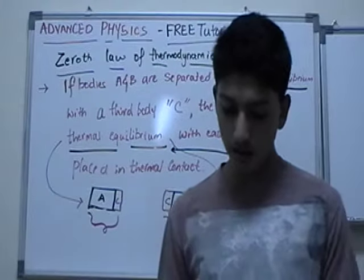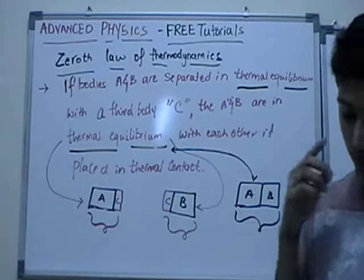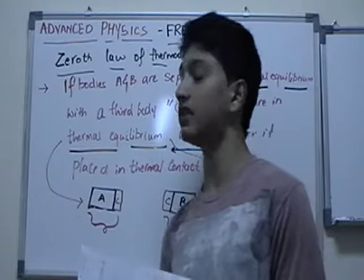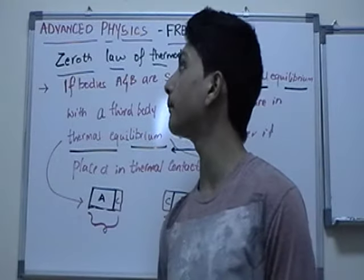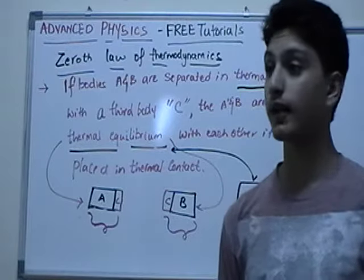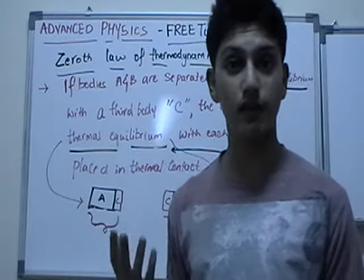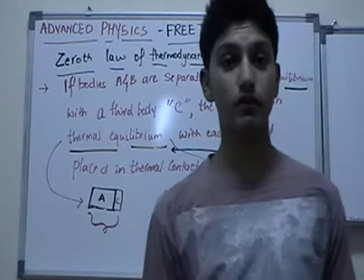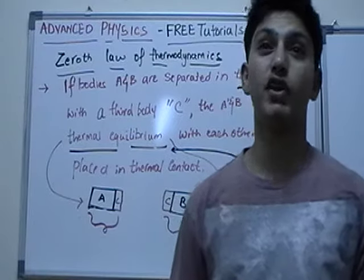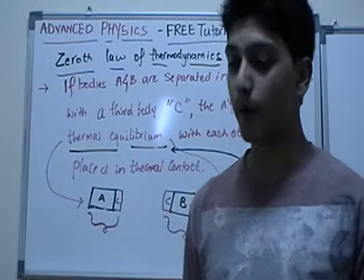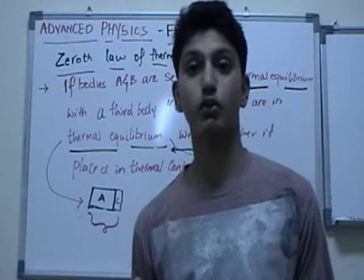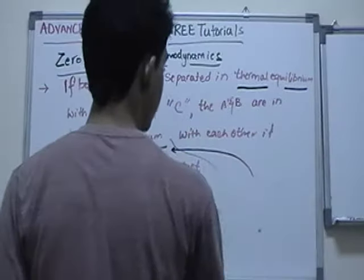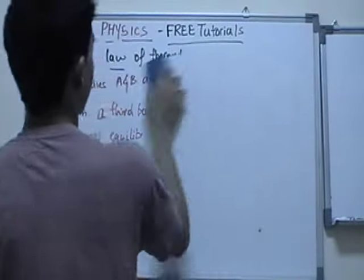Now the next thing we'll talk about is temperature scales. I talked about three temperature scales: engineering people use Celsius, if you move on to advanced physics we'll use Kelvin scale, then the third scale which we don't really use, not really important but you're introduced to it, is Fahrenheit scale. Let's start talking about temperature scales. I'll erase the board.